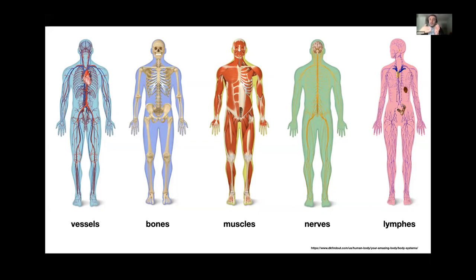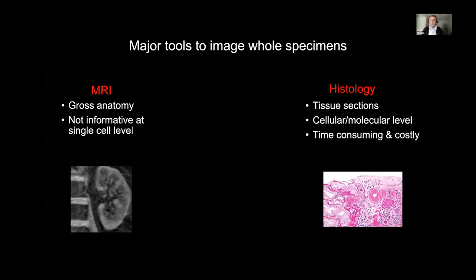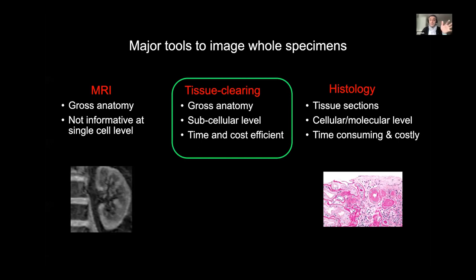A disease affecting one part of the body will affect the rest — cancer metastasis is a clear example. Within organs there is a high level of tissue heterogeneity, so to study organ function it's important to look at the whole organ, not pieces of it. Current imaging modalities like MRI, fMRI, and DTI provide time-lapse views but not cell-level molecular information, while histology only examines tiny pieces of tissue.